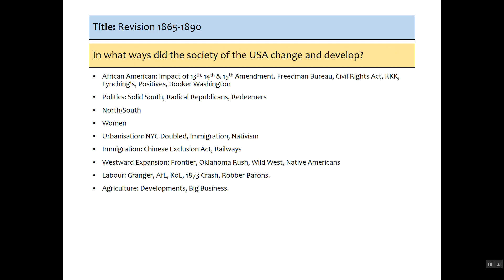Our second question: how does society change? You're going to mention African-Americans, politics, North-South, women, urbanization, immigration, westward expansion, labor, and agriculture. Society changes significantly because of the Reconstruction era and the 14th and 15th Amendments. We've got the creation of the KKK, the reactions to that, the lynchings, and the anti-KKK laws. There are some positive changes to African-American lives with Booker Washington and a middle class emergence. In the South, we've got the Solid South, Radical Republicans, and the Redeemers.